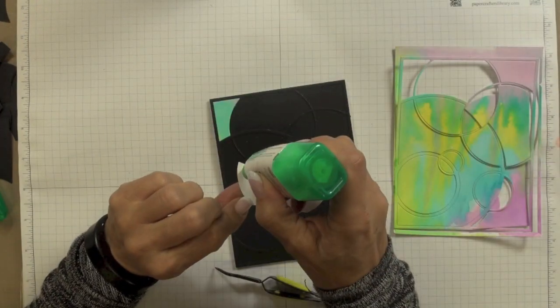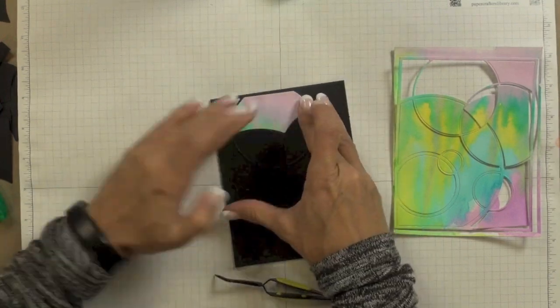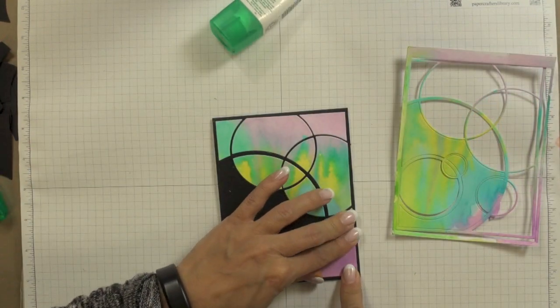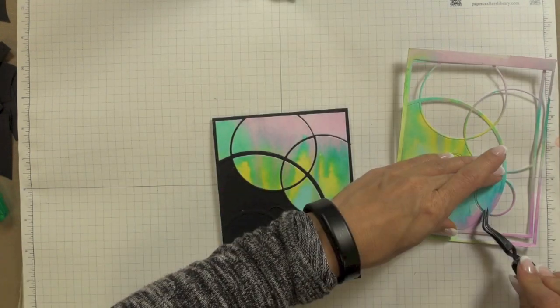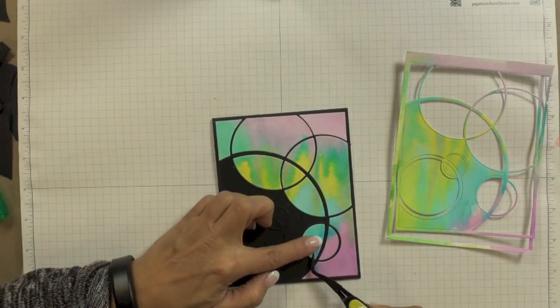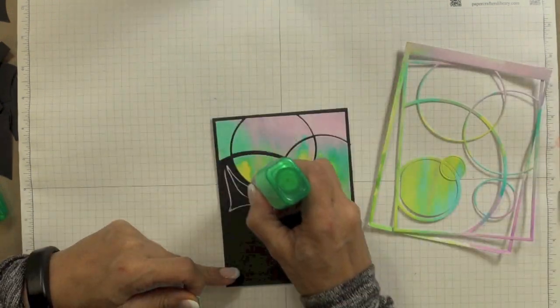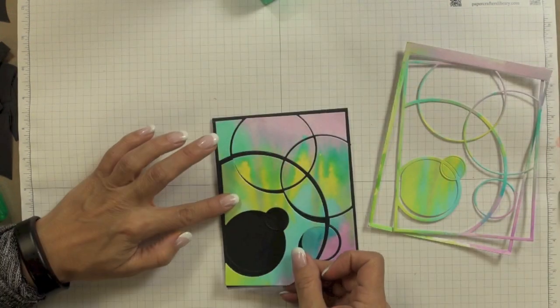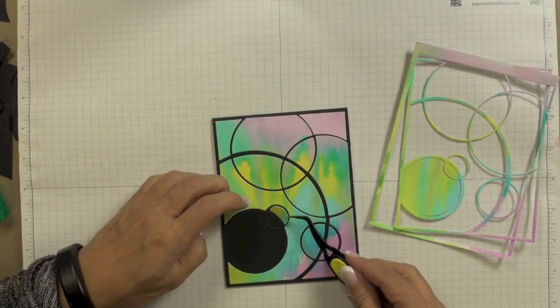So at this point I started inlaying my watercolor die cut pieces into the black mod circle frame on my card front and to do that I used some of my Tombow mono multi-liquid glue and it really is very much like assembling a jigsaw puzzle. I just made sure that I fit the corresponding pieces into their corresponding places on the black mod circle frame and I applied every single one of the pieces except for that final circle.